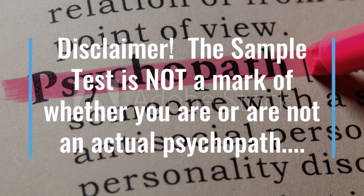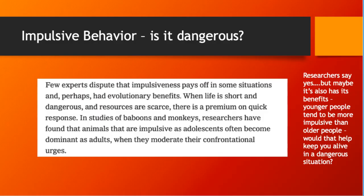I want to issue a disclaimer. As discussed in the videos — Jon Ronson's TED Talk and the 'This American Life' podcast — your score on the Psychopath Test, especially the sample test available online this week, is not a mark of whether you are an actual psychopath. Take it with a grain of salt. But impulsive behavior has been studied by researchers for decades, and it really does show interesting things about the link between impulsive behavior and whether or not it is dangerous.